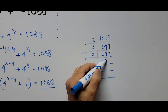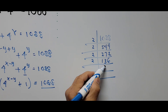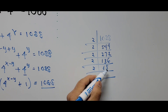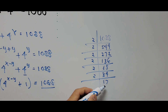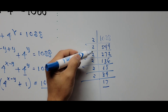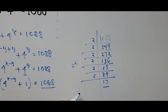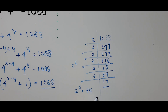We keep dividing by 2: 544 → 272 → 136 → 68 → 34 → 17. Since 17 is not divisible by 2, it is one of the prime factors. Counting the divisions, we have 2 to the 6th power, and 2 to the 6 equals 64. So the factors of 1088 are 64 and 17.